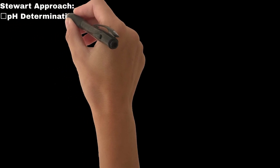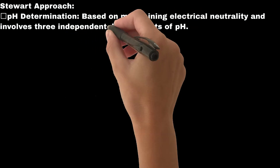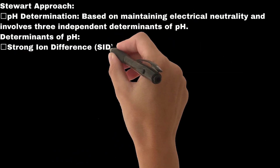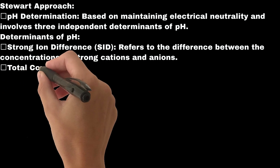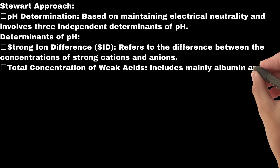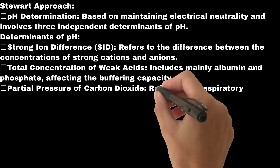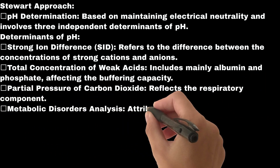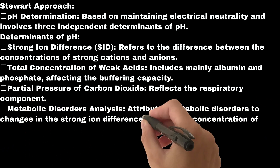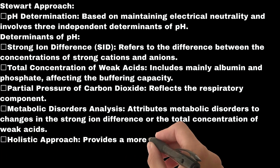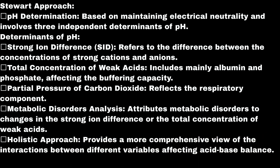The Stewart approach: pH determination is based on maintaining electrical neutrality and involves three independent determinants of pH. These are: the strong ion difference (SID), referring to the difference between concentrations of strong cations and anions; the total concentration of weak acids, including mainly albumin and phosphate, affecting buffering capacity; and the partial pressure of carbon dioxide, reflecting the respiratory component. Metabolic disorders are attributed to changes in SID or the total concentration of weak acids, providing a more comprehensive view of interactions affecting acid-base balance.